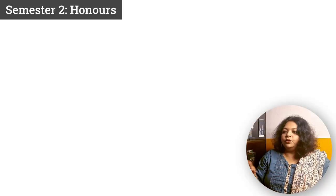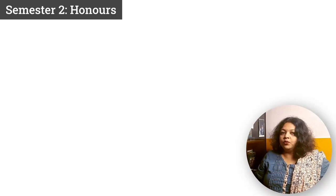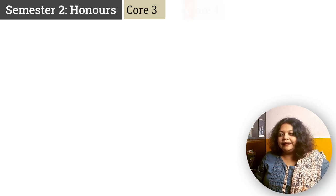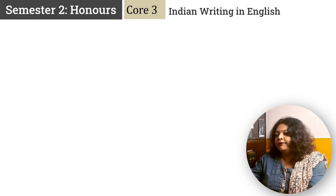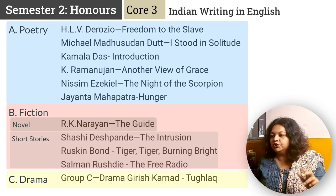Let's start with semester 2 English Honours for colleges under West Bengal State University or Barasat University. You have two core papers here: Core 3 and Core 4. Core 3 is Indian Writing in English, and you have poetry, fiction — which includes novel and short story.